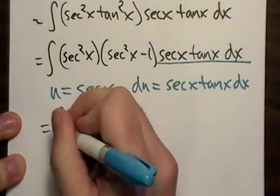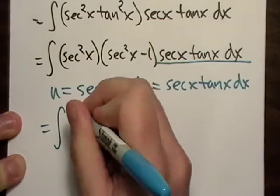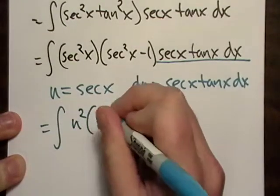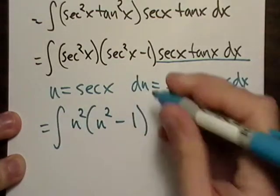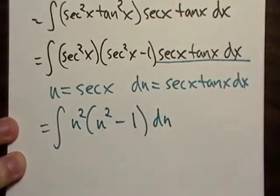So let's go ahead and we'll just go u squared, u squared minus one and that just du after that, right?